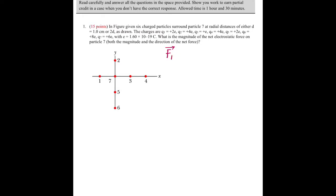The approach is to use Coulomb's law, which gives the force between two charged particles. The Coulomb's law force on charge particle 1 due to charge particle 2 equals 1 over 4π epsilon-naught — the electrical constant — times Q1 times Q2, divided by R squared, times R-hat. R is the separation between the two particles, and R-hat is the unit vector in the direction of the force.